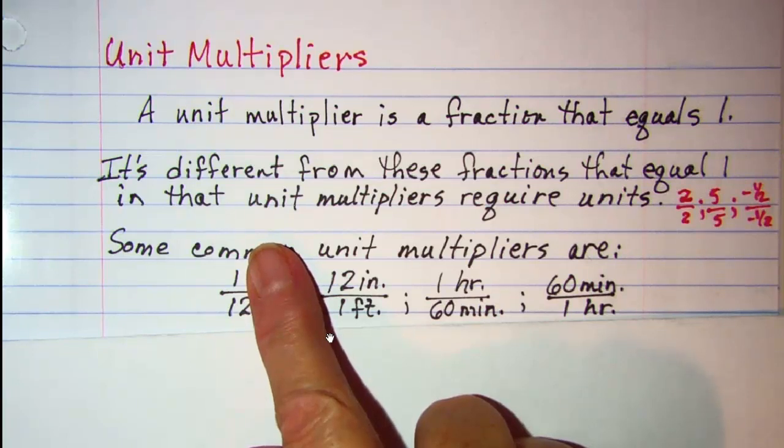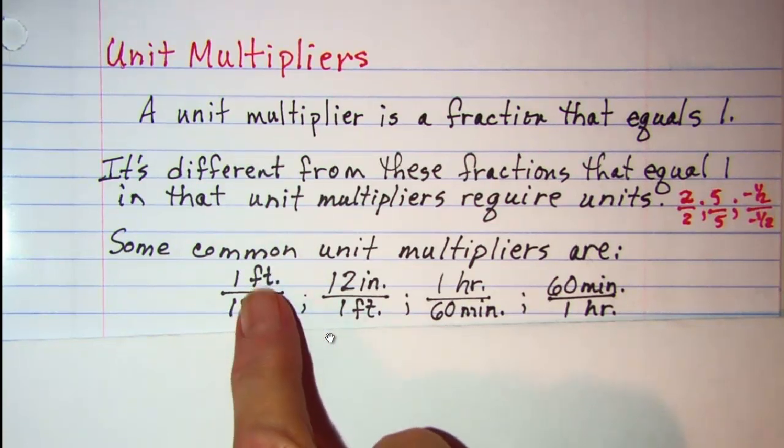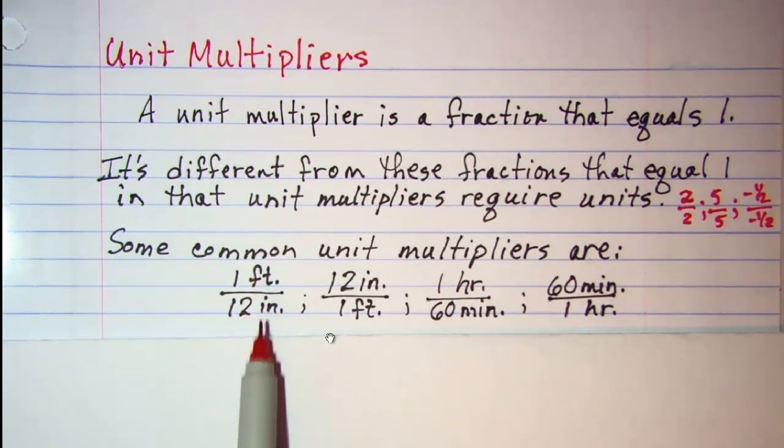But if we remove the units here then our numbers would be one over 12 and that's no longer equal to one. So for a unit multiplier you have to have these units on the numerator and on the denominator and they have to be the same measure.